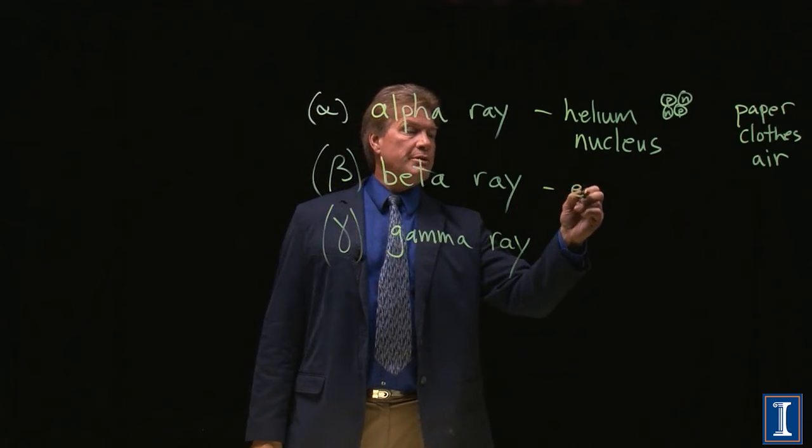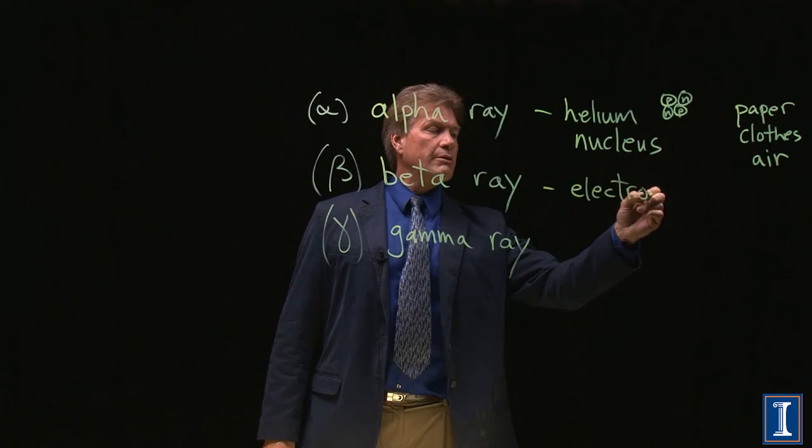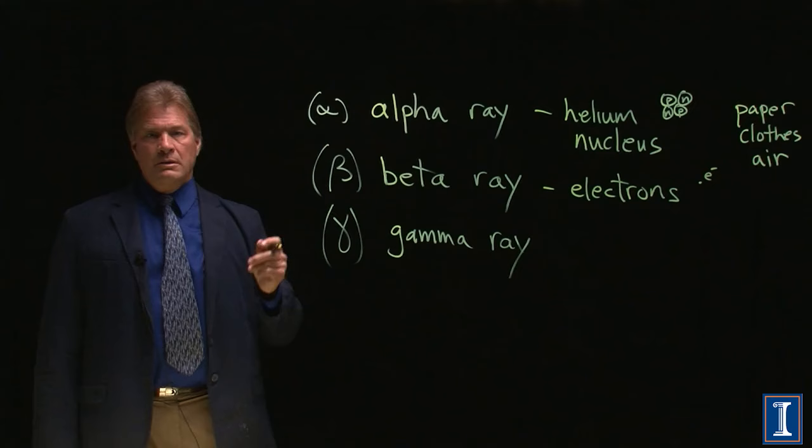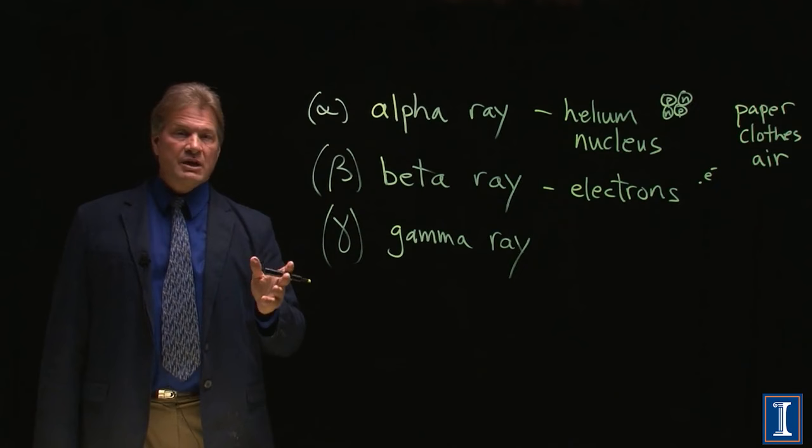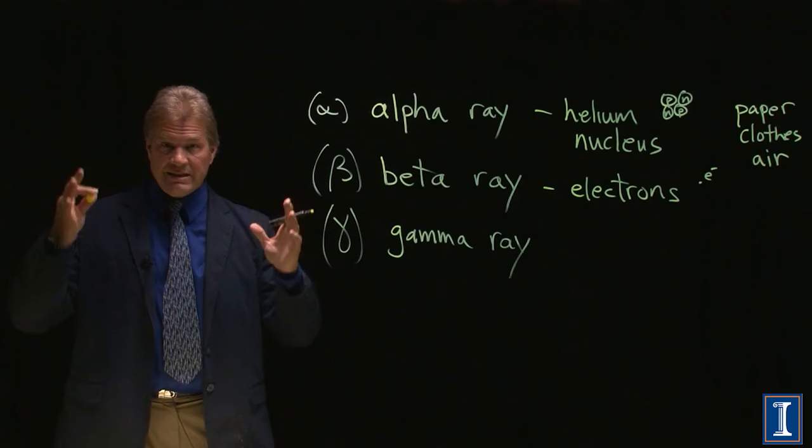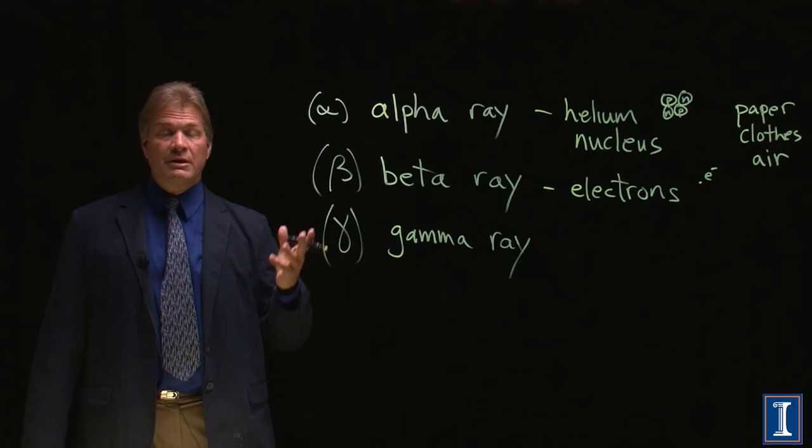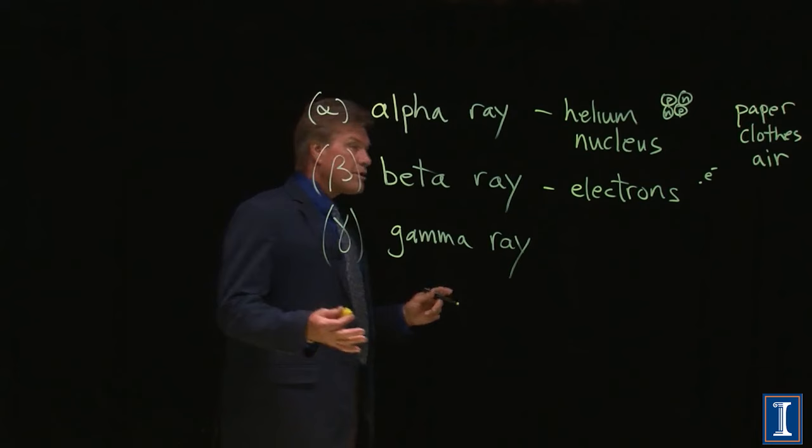What about betas? Betas are also something very commonplace in the subatomic factory. They are electrons, just a simple electron. Electricity is moving electrons. An electron is what's stripped off of an atom when it's ionized. When they used to have cathode ray tubes, the old-fashioned thick TVs, they had an electron gun shooting at the screen. Those were electrons. A high-energy electron is a beta.